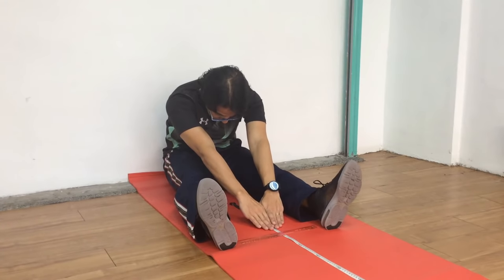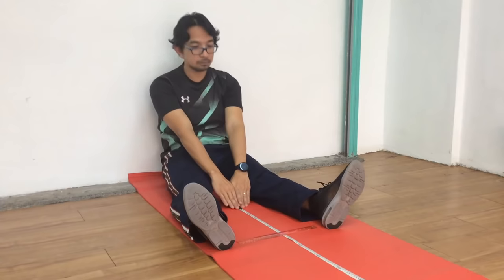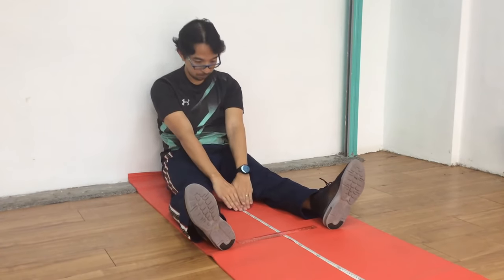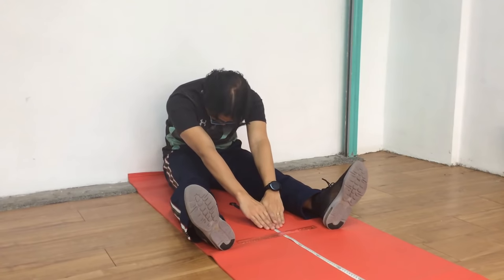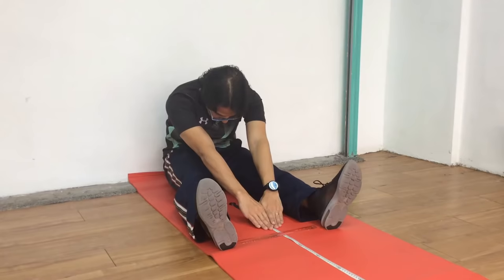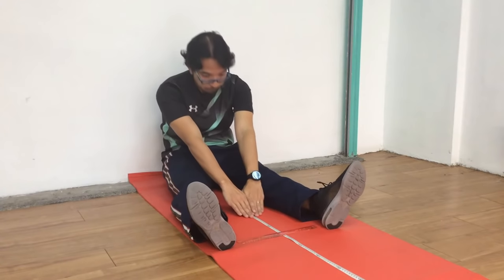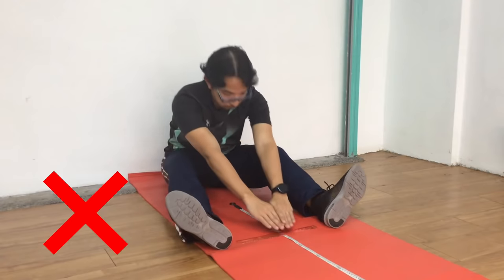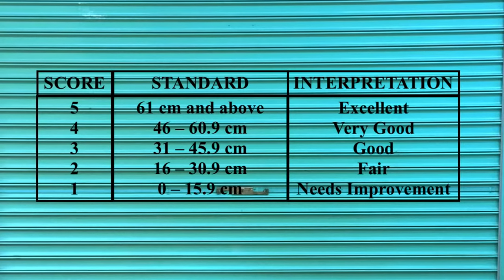Try to reach the farthest distance as possible without bending the knees. Then your partner will record the distance. You need to do it twice. Bouncing or jerking movement is not allowed. This is the scoring for sit and reach.